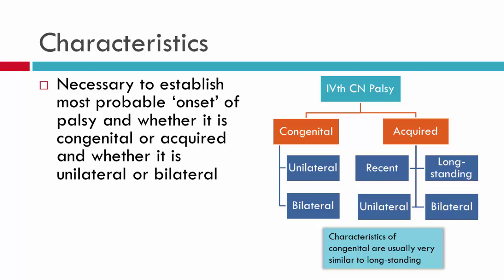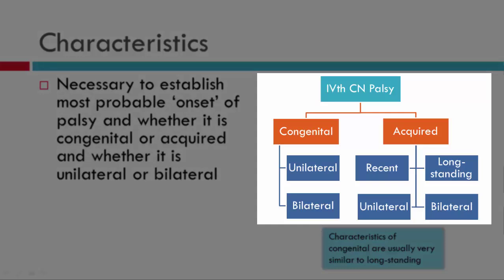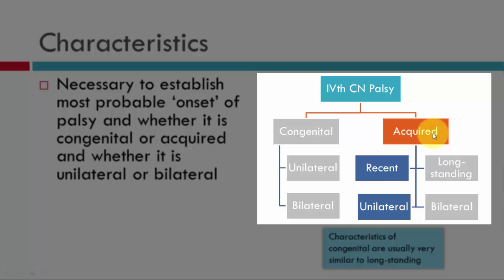When we see a patient with a 4th nerve palsy, it is necessary to establish whether the condition is congenital or acquired, and whether it is unilateral or bilateral. The flowchart shown here illustrates that distinction: is the condition congenital or acquired, and then is it unilateral or bilateral? If it's acquired, we also need to work out if it's recent or long-standing. This video will specifically focus on acquired cranial nerve palsies that are recent and unilateral.